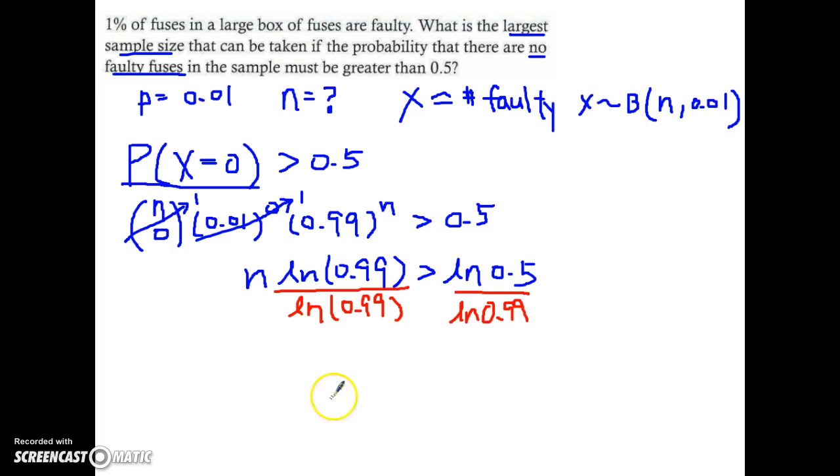So my n has to be less than... if you put that in your calculator you should get something close to approximately 68.96 blah blah blah.